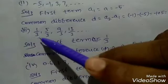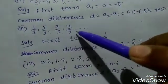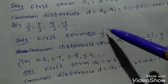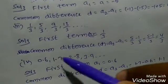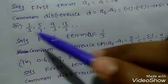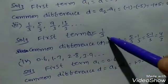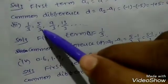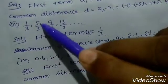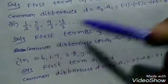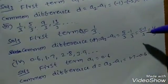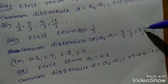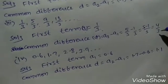Third sequence: 1 by 3, 5 by 3, 9 by 3, 13 by 3 and so on. First term a1 equals 1 by 3. Common difference d equals a2 minus a1, that is 5 by 3 minus 1 by 3. Since denominators are equal, add numerators: 5 minus 1 equals 4, so d equals 4 by 3.